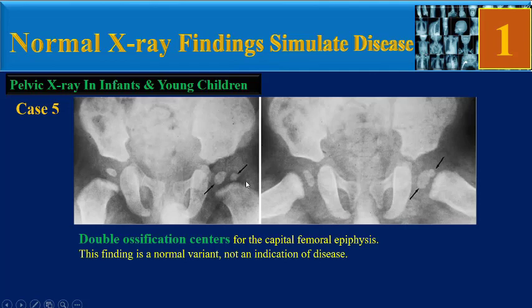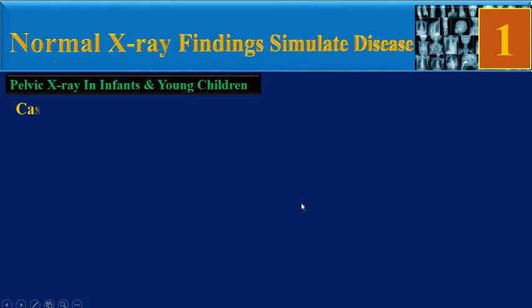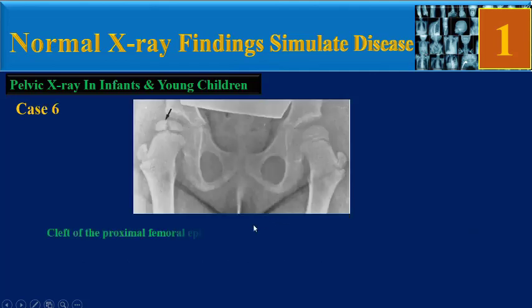Case 5: double ossification centers for the capital femoral epiphysis. This finding is a normal variant, not an indication of disease.